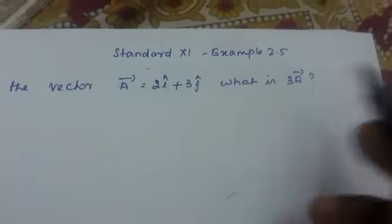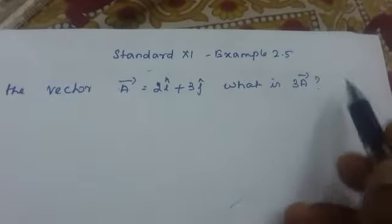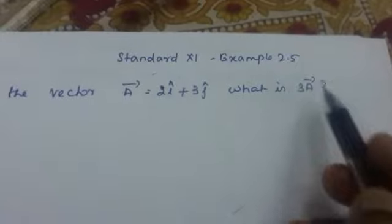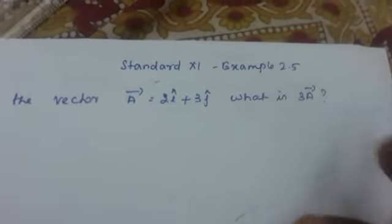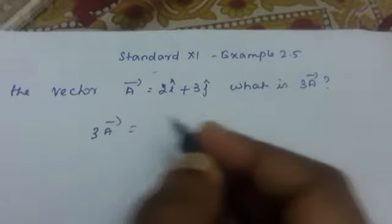This is a scalar multiplied by a vector. Here 3 is a scalar, a⃗ is a vector. So we can go for finding this, just we have to go for ordinary multiplication.